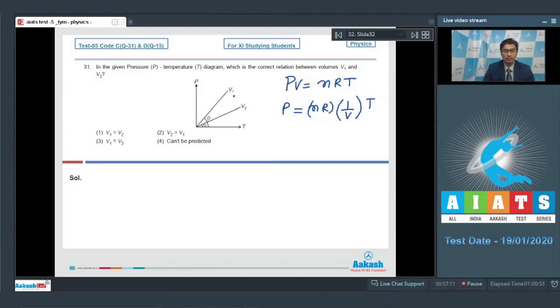In this particular diagram, we can see that since beta is greater than alpha, the slope of the V1 graph is greater than the slope of V2 graph, which means V1 should be less than V2, which makes option number 2 of this question as the correct answer.